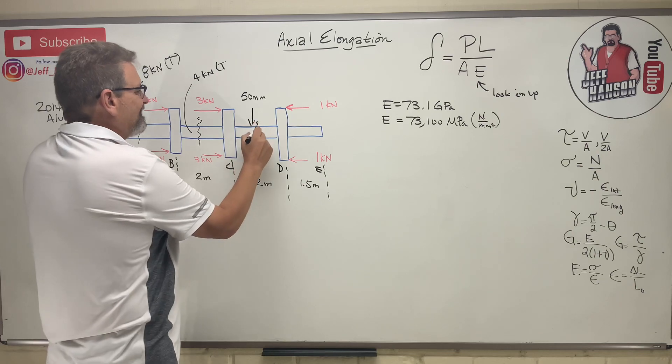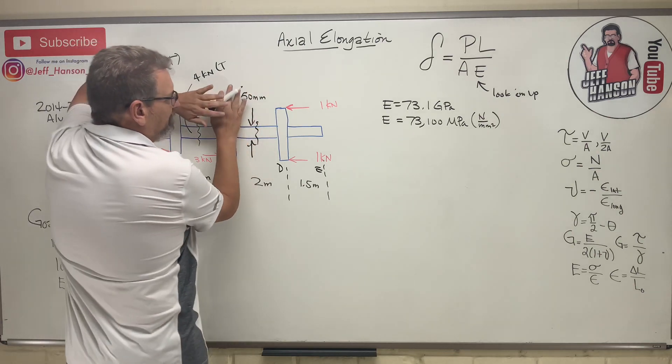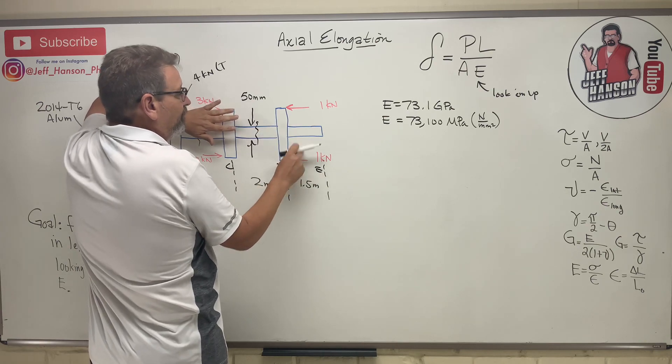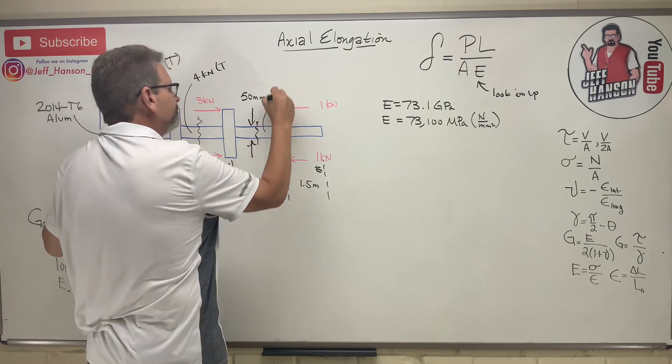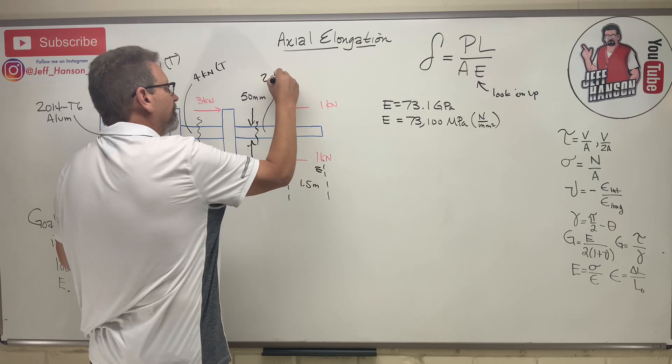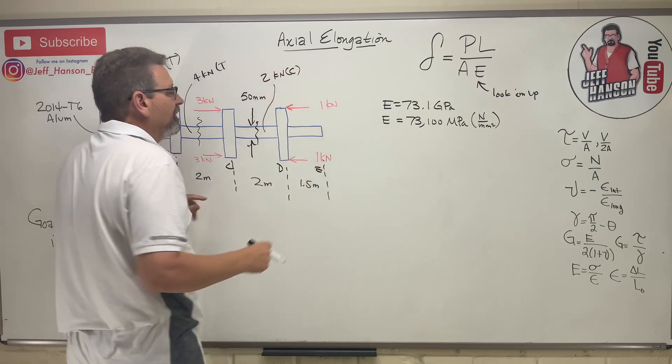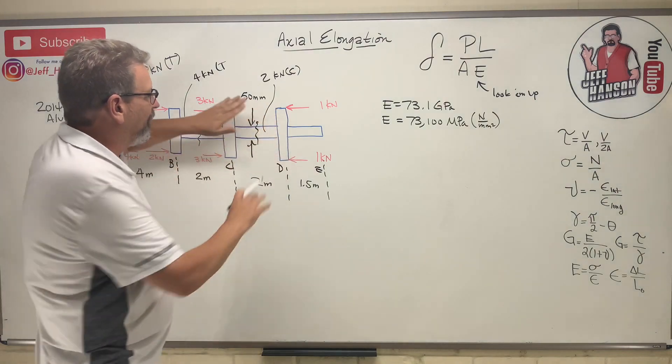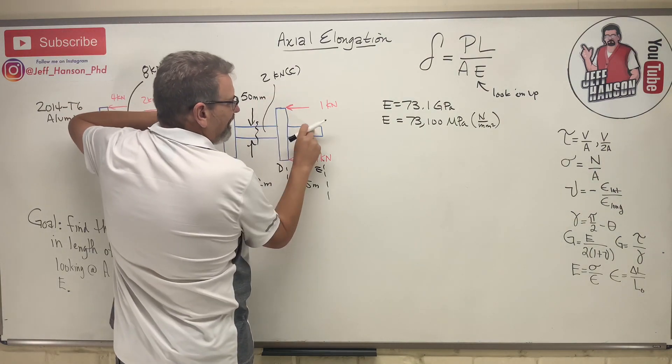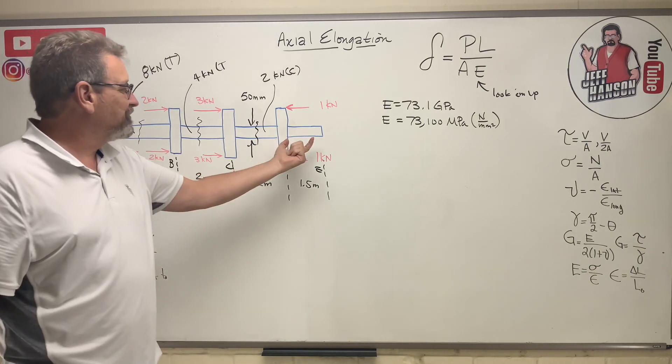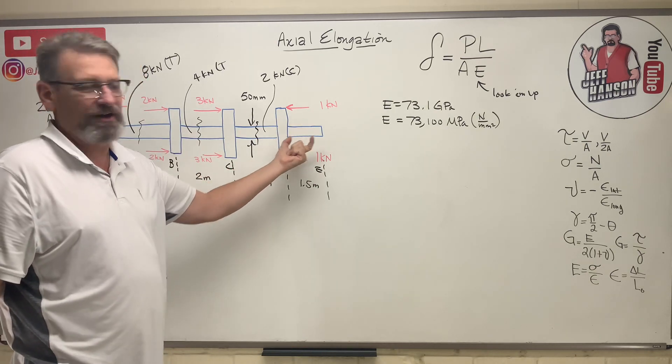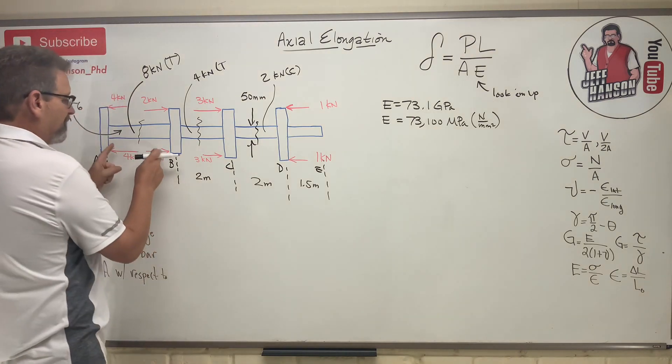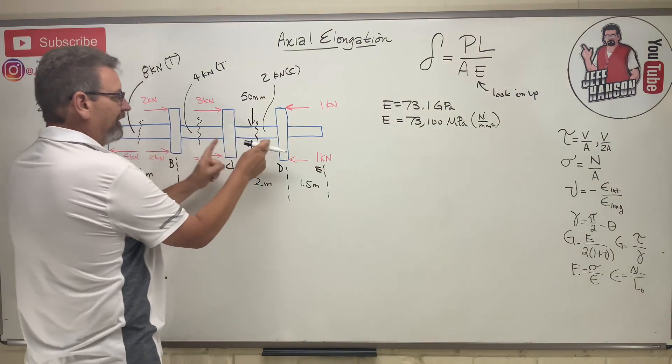This last section - what's going on? Well, this section is actually in compression. It's two kilonewtons in compression. What about this guy? If I cover everything up, how much is in that guy? Nothing. This guy is just kind of along for the ride out here, so he makes no difference. The total elongation is going to come from this one, this one, and this one.